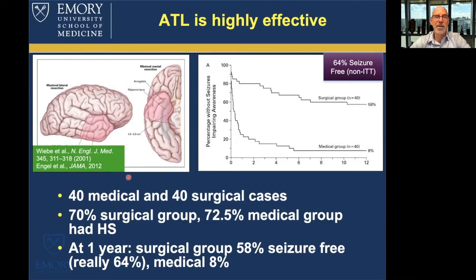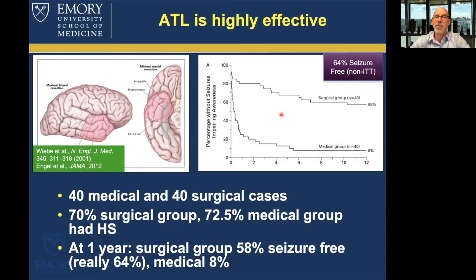This trial was carried out by Sam Wiebe, a neurologist at the University of Western Ontario in London, Ontario. He performed a randomized controlled trial of best medical therapy against surgical treatment and found that after one year, the surgical group had a 58% seizure-free rate compared to 8% in the medical group. This was an intent-to-treat analysis — all patients assigned to the surgical group remained in it whether or not they had surgery. Four patients did not have surgery and were counted as not seizure-free. Among patients who actually had surgery, 64% were seizure-free.